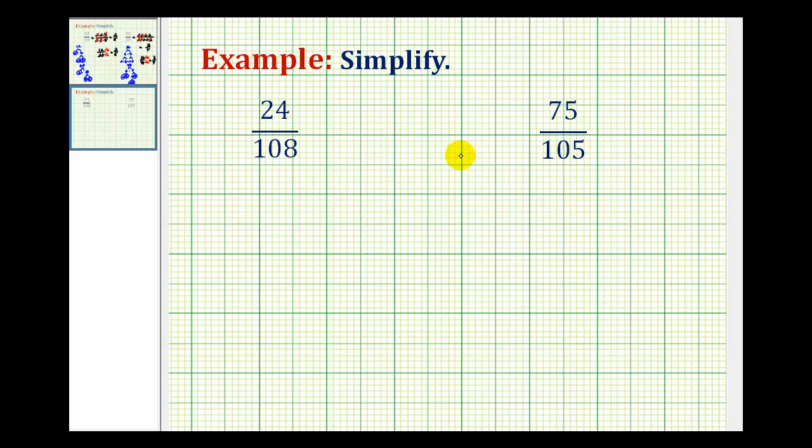We want to simplify the following fractions. A fraction is in simplest form if the numerator and denominator do not contain any common factors. Sometimes just by looking at a fraction it's hard to determine what the common factors would be.